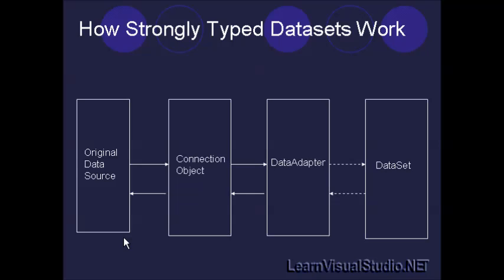Regarding strongly typed data sets, let's talk briefly about how they work. First, you have the original data source — that can be a database such as SQL Server or Oracle, a text file, an Excel spreadsheet, or whatever you can hit using the OLEDB connection object. Then you have a connection object which creates a connection to the database. And then you have one of the most important relationships to a data set — the data adapter. Data adapters are essentially the glue between data sets and connection objects. They allow you to grab data from the data connection and store it in the data set, and most importantly, whenever changes are made to that data set — even though it's disconnected for seconds, minutes, hours, or days —